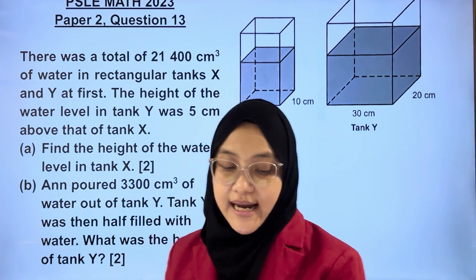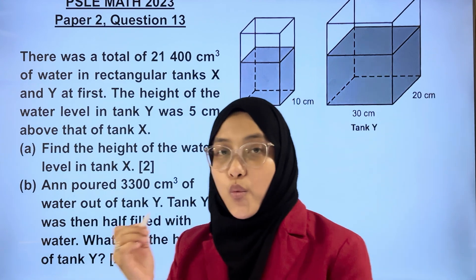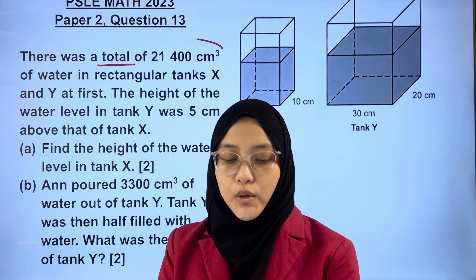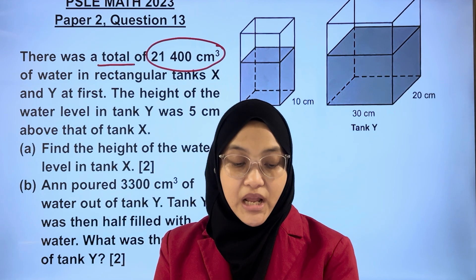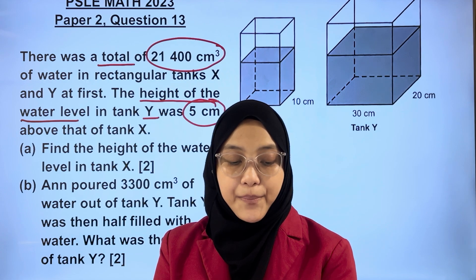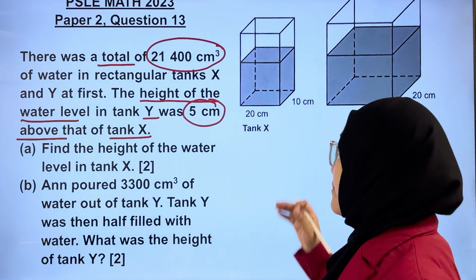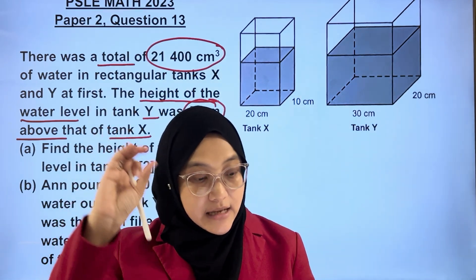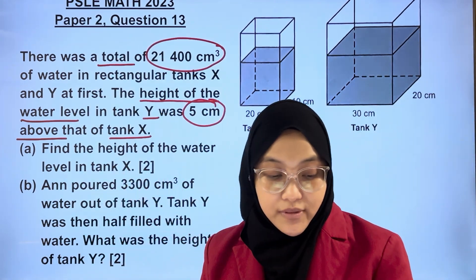Let's solve part A. We are asked to find the height of water in tank X. What are the information given to us? We are given the total volume of water to be 21,400 cubic centimetres. We are also given that the height of water level in Y was 5 cm above that of tank X. This means that the water level is not the same. We need to get rid of the excess volume of water in tank Y before we can solve part A.